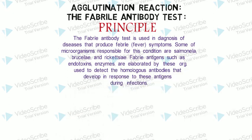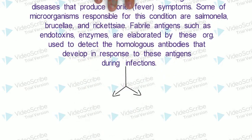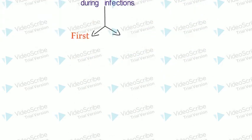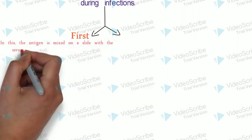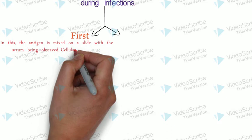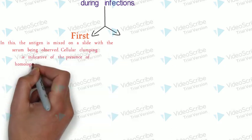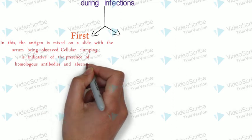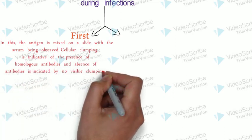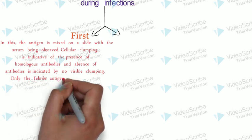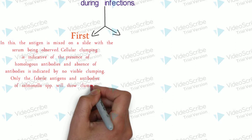This principle contains two parts. First, the antigen is mixed on a slide with the serum being observed. Cellular clumping is indicative of the presence of homologous antibodies, and absence of antibodies is indicated by no visible clumping. Only the febrile antigens and antibodies of Salmonella species will show clumping.